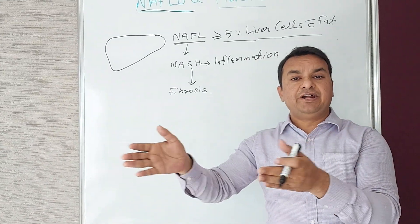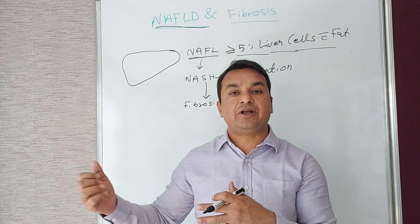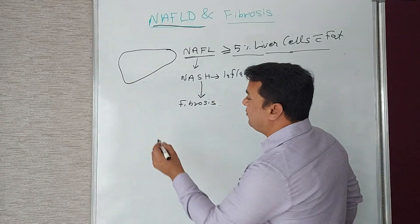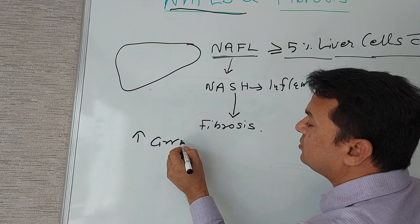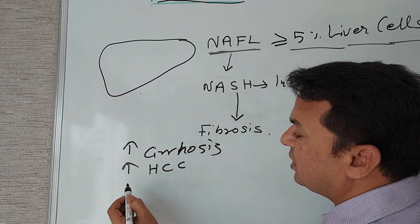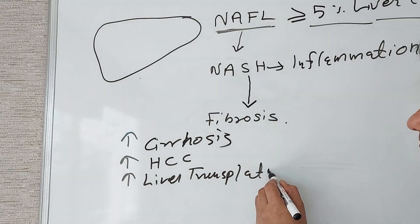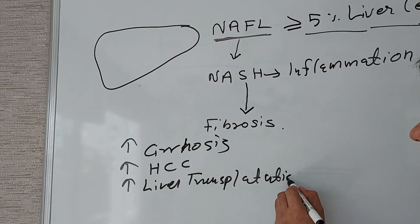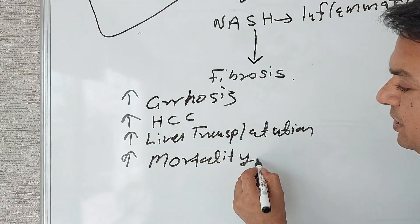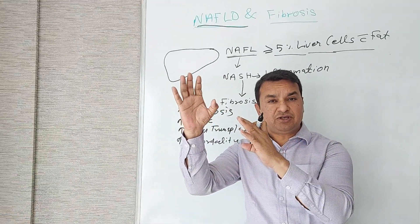Fibrosis ultimately leads to adverse liver-related endpoints or events. Patients having fibrosis in liver will have higher risk of cirrhosis, higher risk of hepatocellular carcinoma, higher risk of liver transplantation, and higher risk of death—that is, mortality. The higher the fibrosis in the liver,